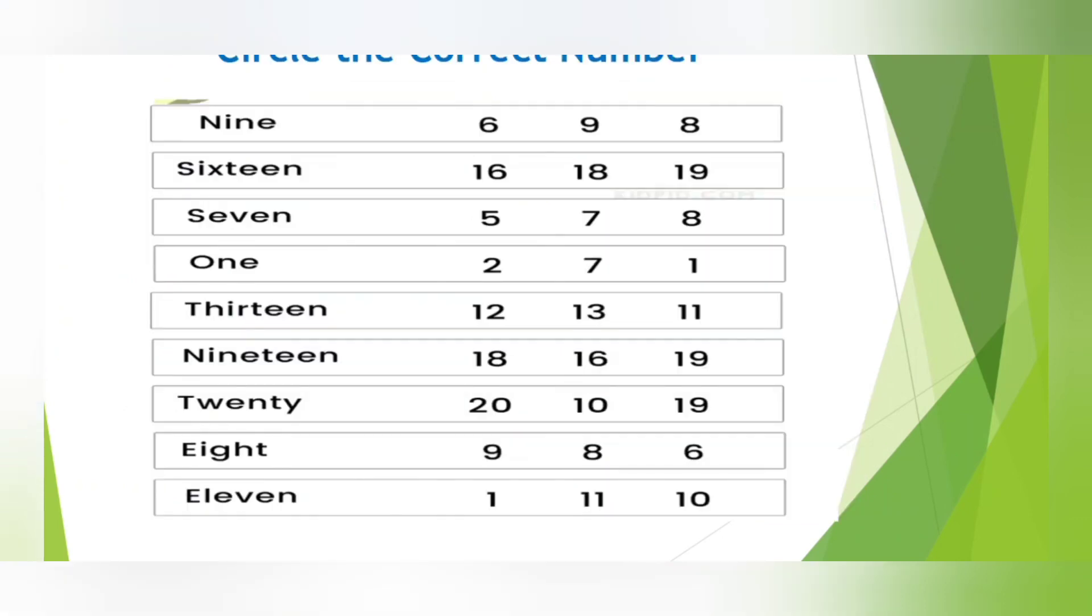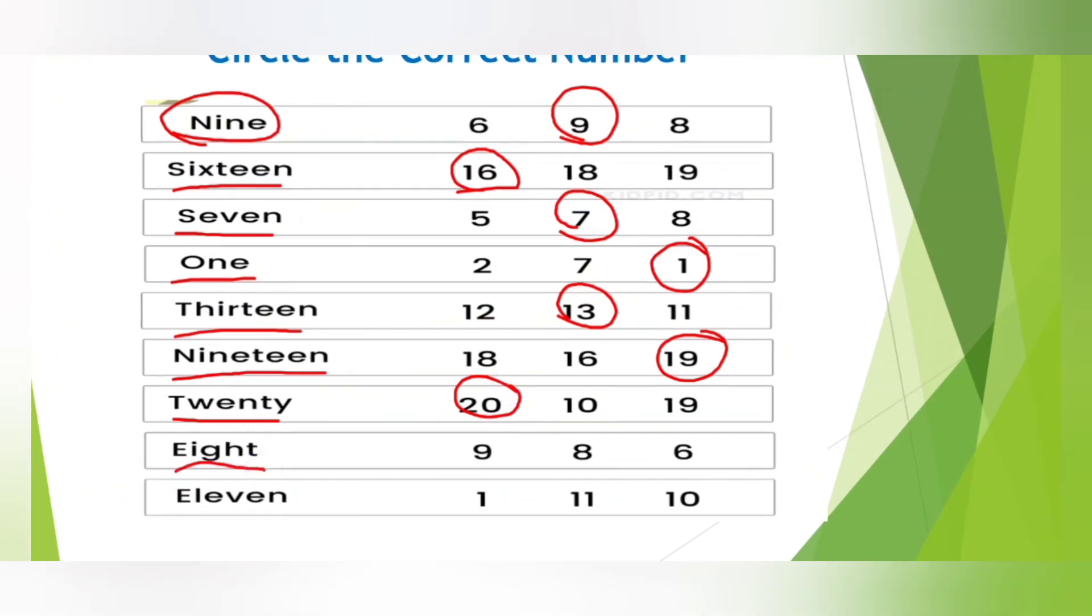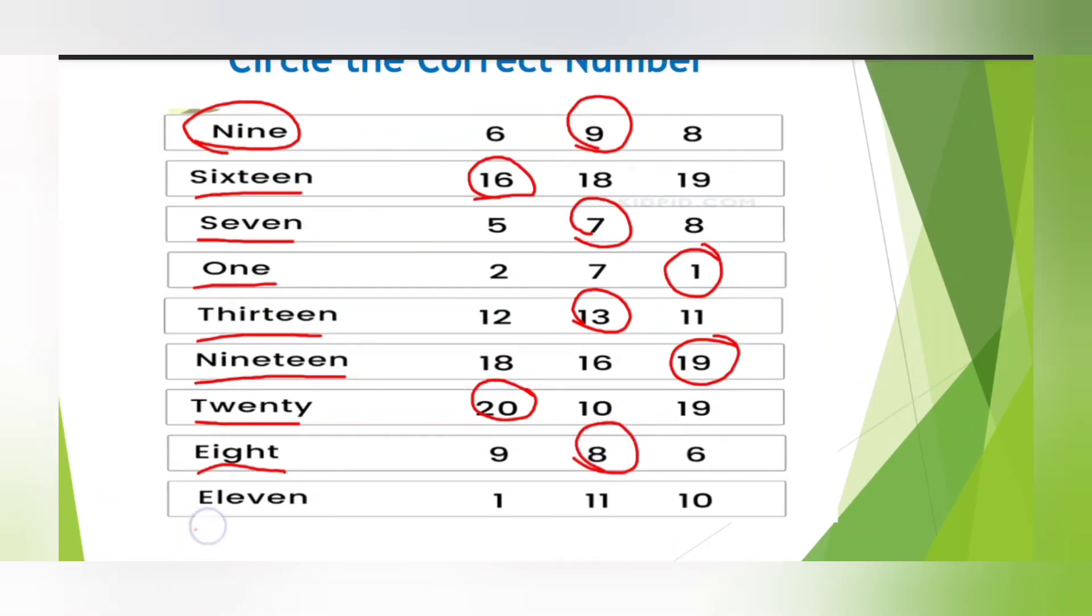The next one, number 1. Yes, O N E. 1. 13. T H I R T E E N. 13. This is number 5. This one, 16. 16. This is 17, the number 7. This is 1, the number 1. Very good. This is 13. 13. Super. 19. 19. Correct. 20. 20. This one? 8. Number 8. The last one? 11. 11. Very good.